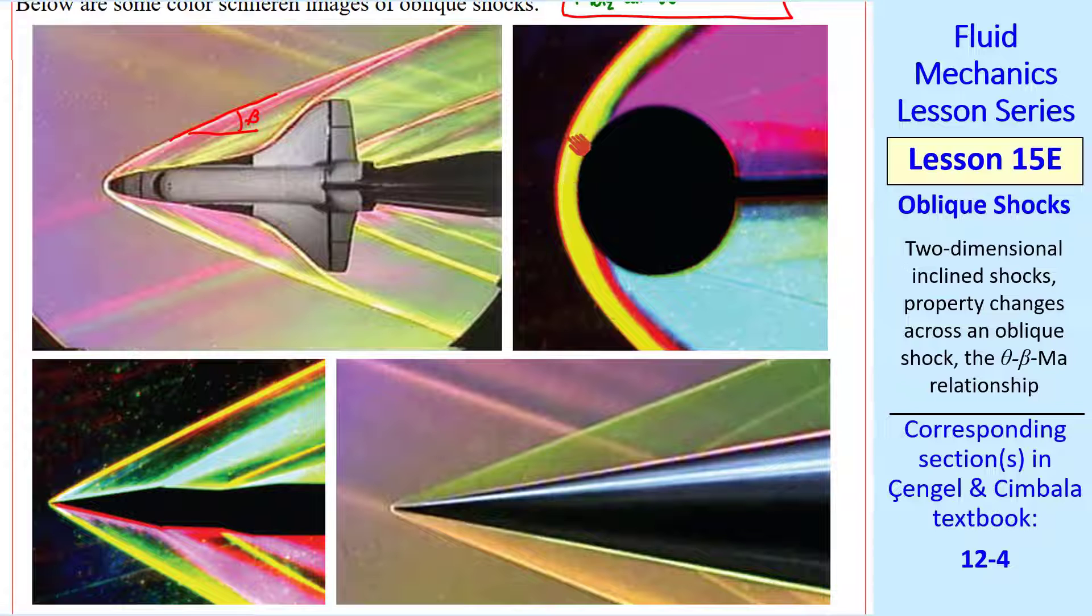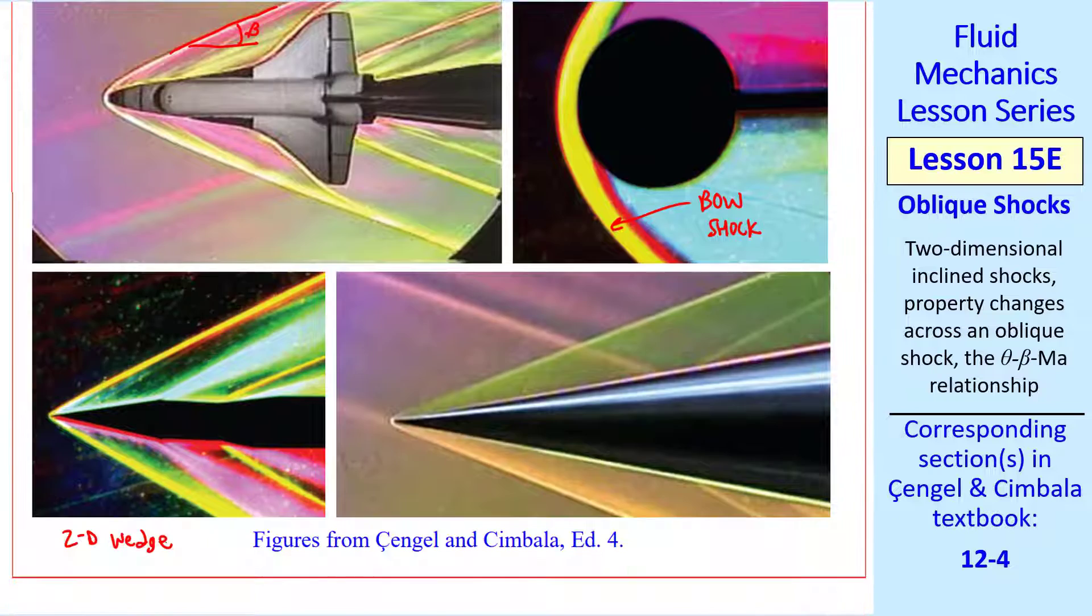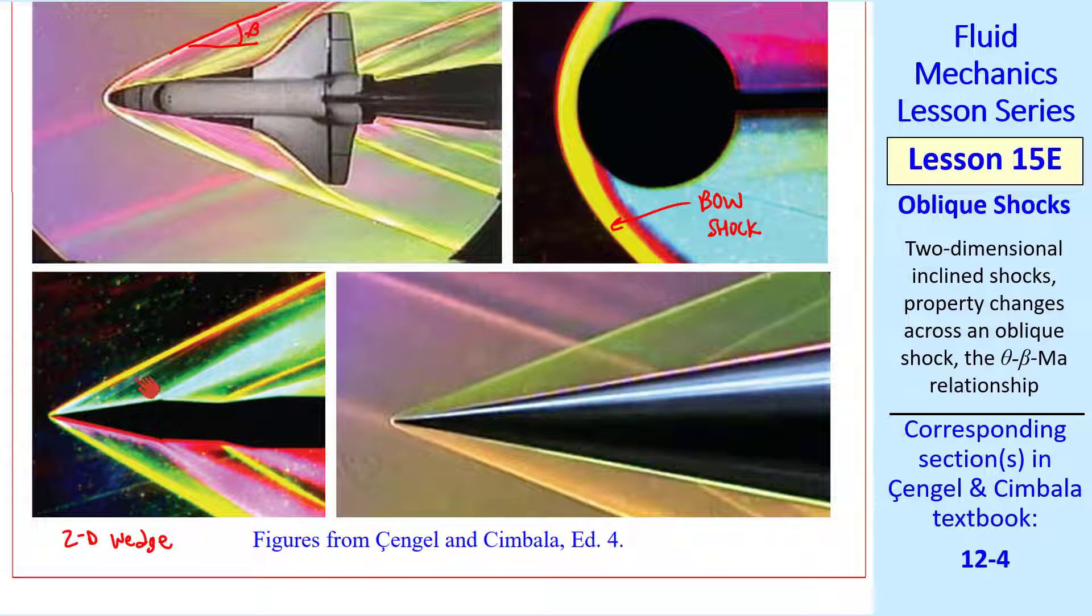This curved oblique shock is called a bow shock. It occurs in front of a blunt object like a cylinder. We see a nice oblique shock for a 2D wedge, and for the axisymmetric analog, which is a cone. In this case, it's a conical shock, rather than a two-dimensional shock.